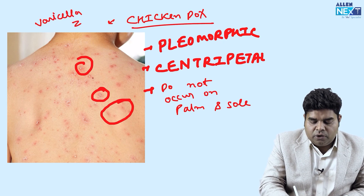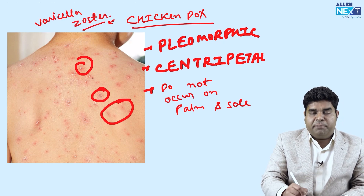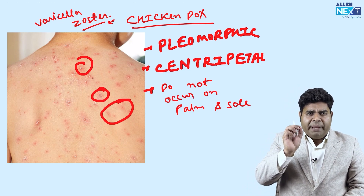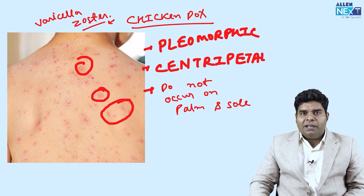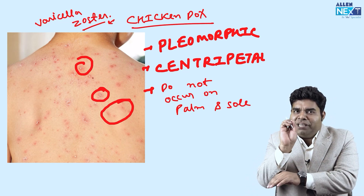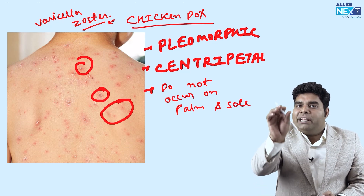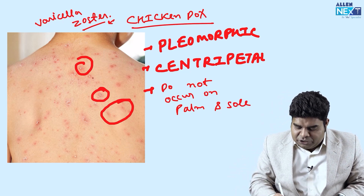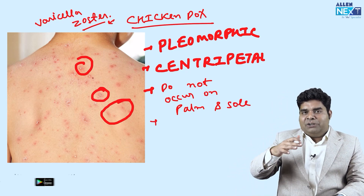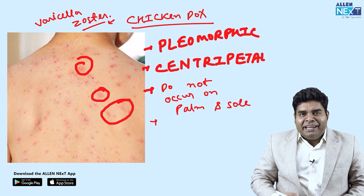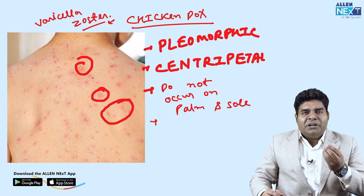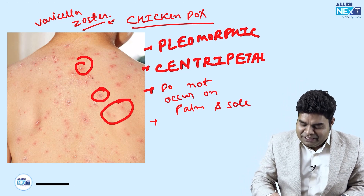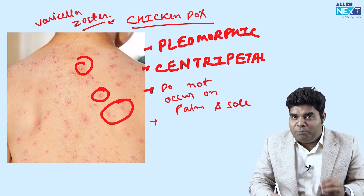We have already read all the incubation period and period of communicability, so we will not repeat it here. But the main question is: why do they call it chickenpox? Because just like the beak of a chicken, the rash comes out from the body prominently, significantly out from the skin surface. That is why a doctor who also had a poet inside him described these rashes as 'dew drops on rose petal' appearance.